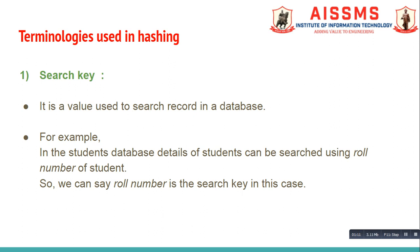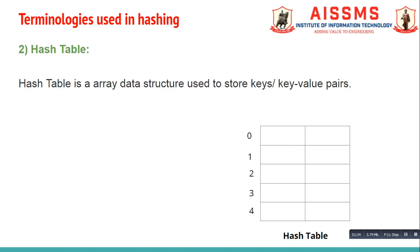The first one is search key. A search key is a value used to search a record in a database. For example, in a students database, details of students can be searched using the roll number of that student, so we can say roll number is the search key in this case.